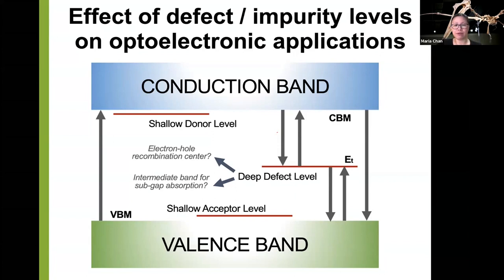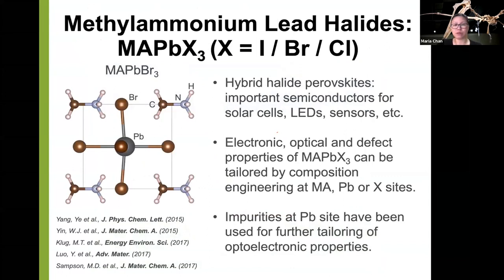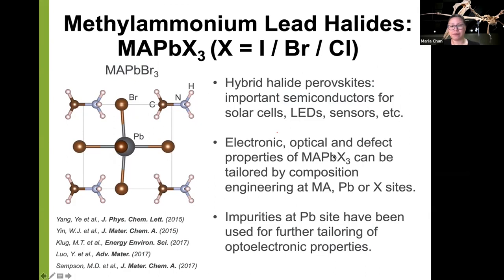A lot of our work concerns methylammonium lead halides. Methylammonium is the CH₃NH₃ molecule. The perovskite A-site cation is methylammonium, the B-site cation is lead, and the anion is either iodide, bromide, or chloride. These are of increasing importance for solar cells, LEDs, and so on. One of the things that makes it so interesting is that you can vary a lot — the A-site, the B-site, the X — essentially all sites can be varied by compositional engineering. Here we focus on impurities at the lead site.